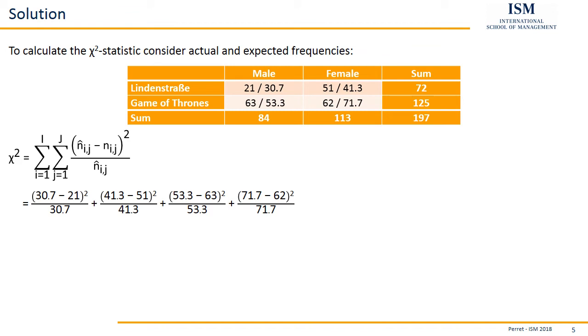For female in Lindenstrasse, we have an expected value of 41.3. So we go 41.3 minus actual value 51, in parentheses, to the power of 2, divided by expected value of 41.3. As I said, we do this for all four cells. This is also one way to control whether you missed something. If you have four cells, you need four terms to calculate the chi-squared statistic. If you have six or ten different cells, you will also get six or ten different terms for the chi-squared statistic. So that's a good way to control. We enter them into the calculator, giving us a final result of 8.4206.